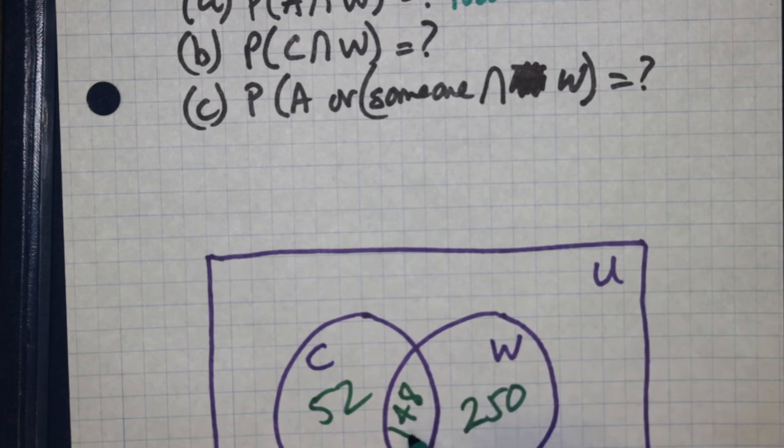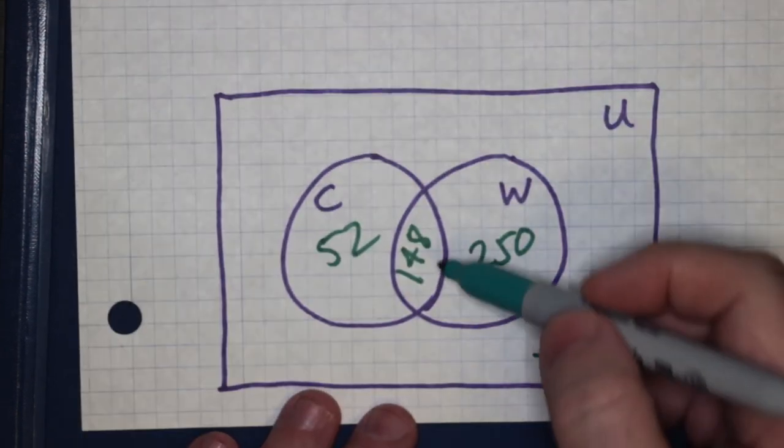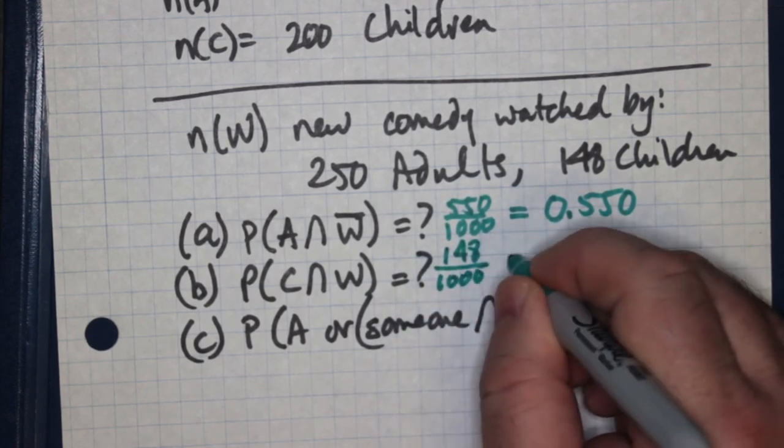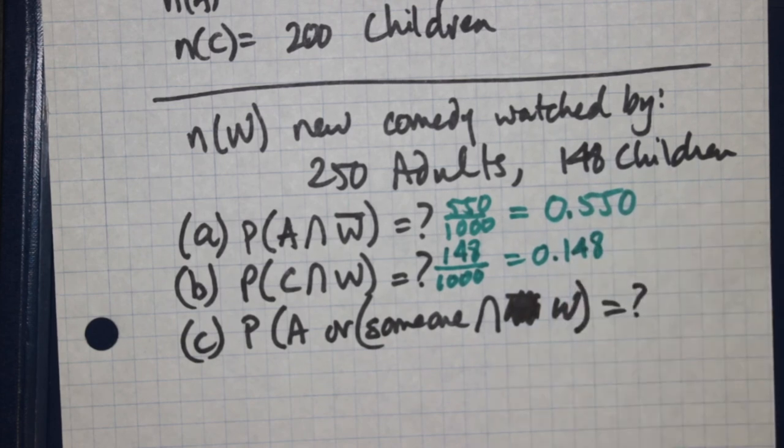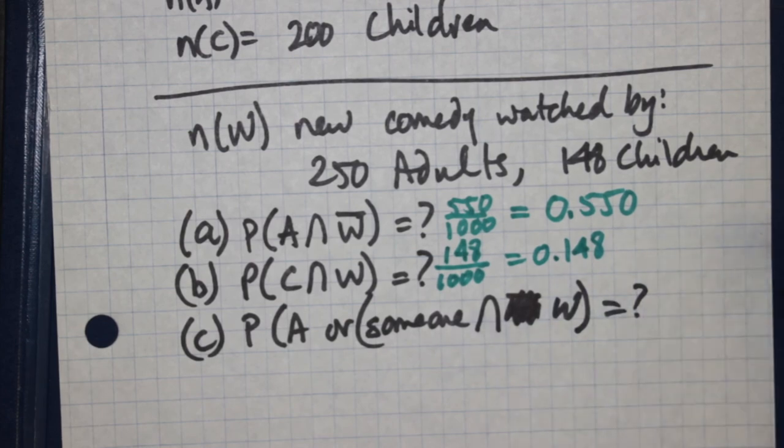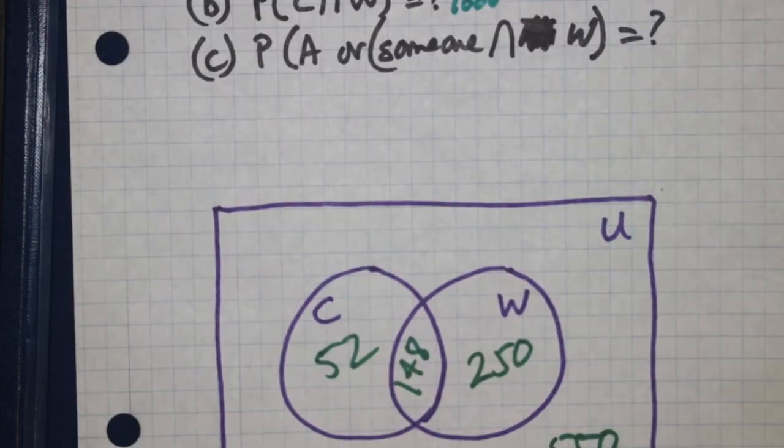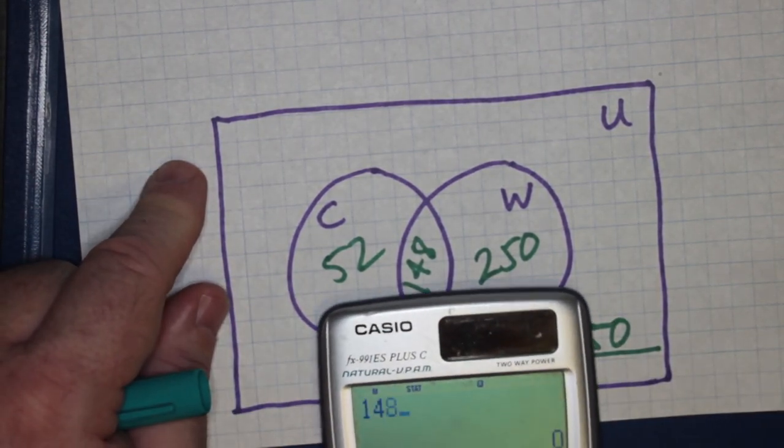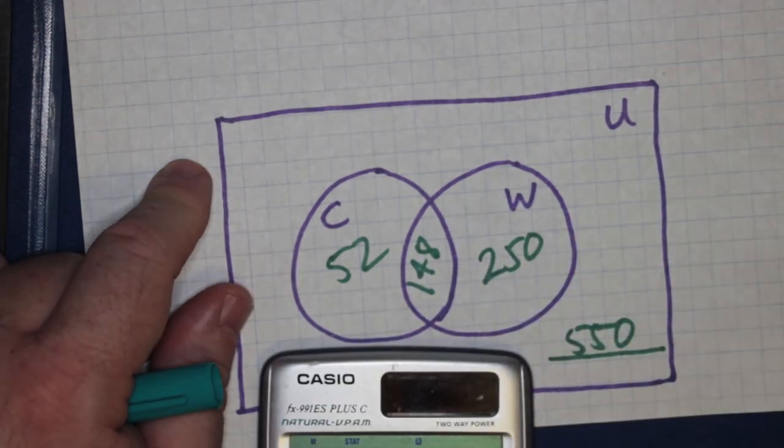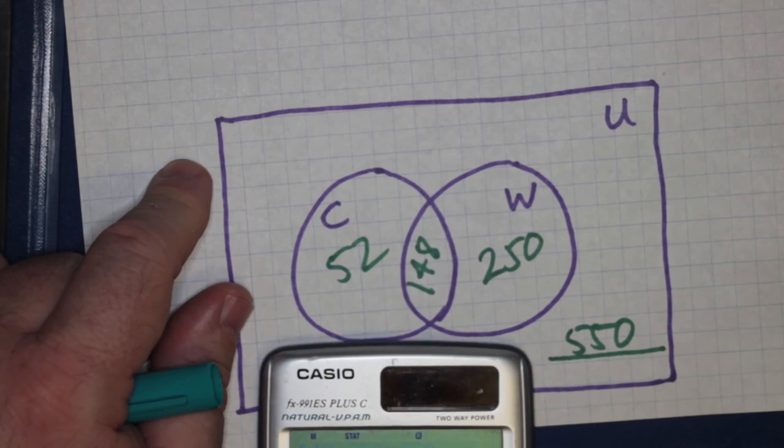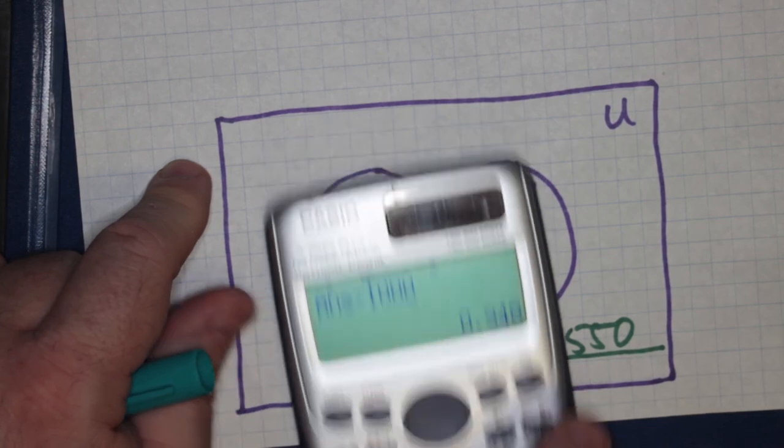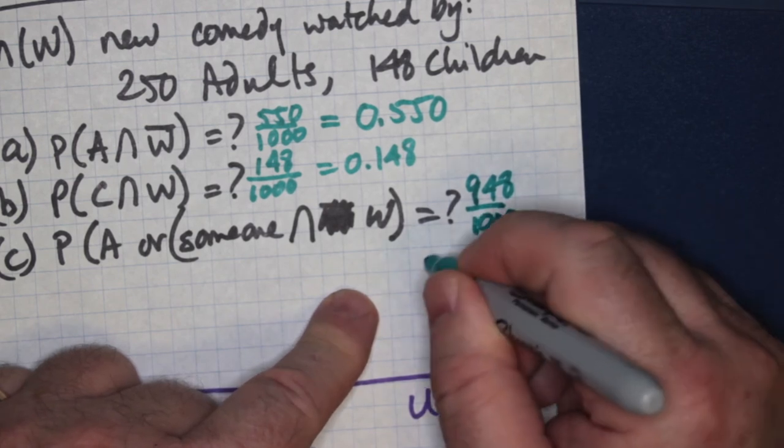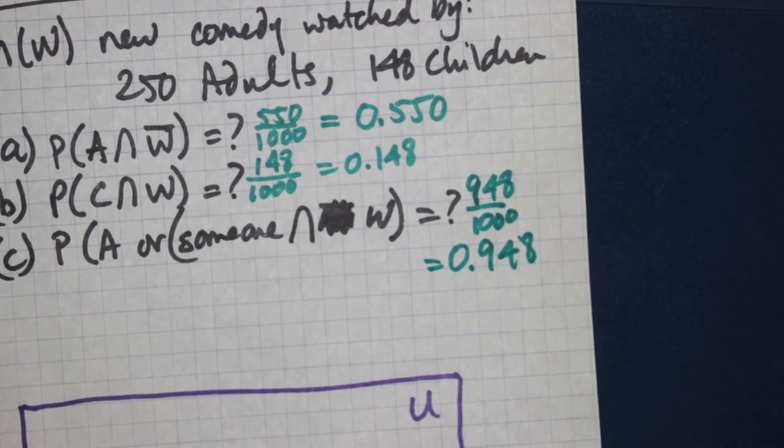What about the probability that we have a child who did watch the program? Well, straight away, we can read that right off the diagram. Children who watch the program number on the order of 148. We put 148 here out of 1,000, and we have 0.148 as the probability that we have a child who watched the program. What about an adult or someone who watched the program? Well, now the ones who watched the program must be the sum of these two numbers. So we have 148 plus 250 plus 550, and then we get 948 and we divide by 1,000. We get 0.948. So in this case, we answer with 948 out of 1,000, which equals 0.948. And that's pretty much how you do that question.